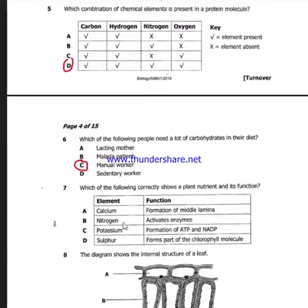Question 7: Which of the following correctly shows a plant nutrient and its function? Calcium, nitrogen, potassium, sulfur. Potassium formation of ATP and NADP, no, not at all. Sulfur formation part of chlorophyll molecule, not really. Nitrogen activation of enzyme, really? Maybe. Calcium, formation of middle lamella. And that is A.